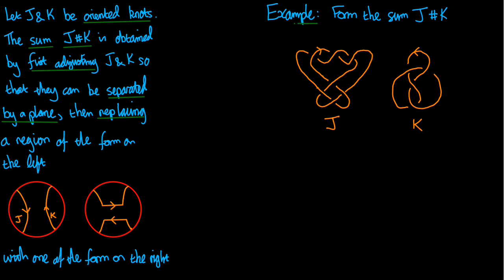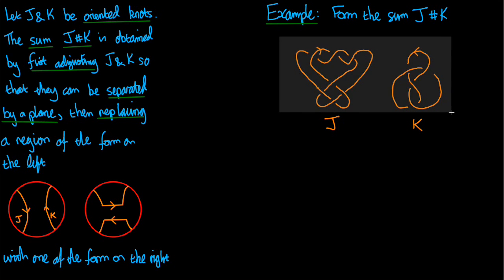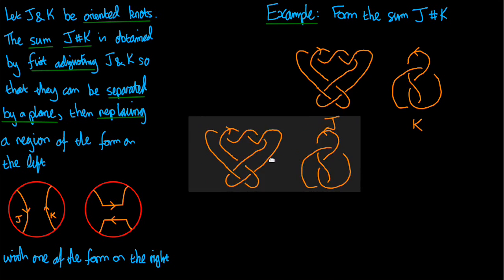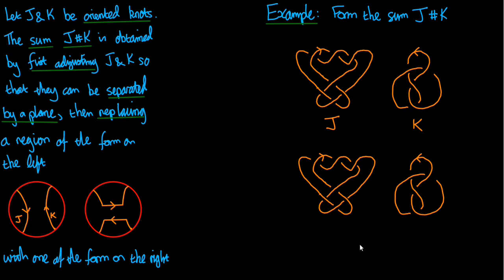So here's an example. The question is form the sum of these two knots J and K. Well I look at the definition and I see that I don't have to do any adjustments. That's because J and K are definitely separated by a plane. It's the plane that crosses the plane of the video in this vertical line here. So that's good, they're separated in the right way.